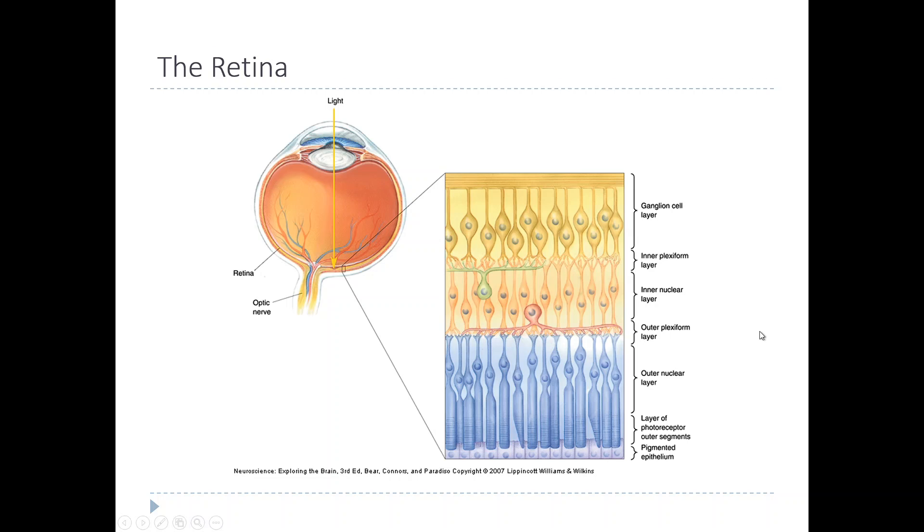Now that we know the overall structure of the retina, let's zoom in and look at the cells that make it up. The retina is just a big sheet that lines the inside of the eyeball.